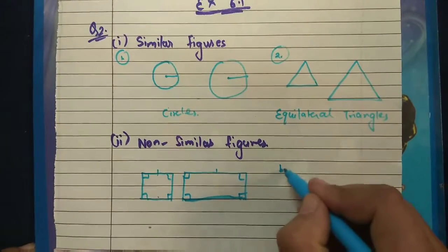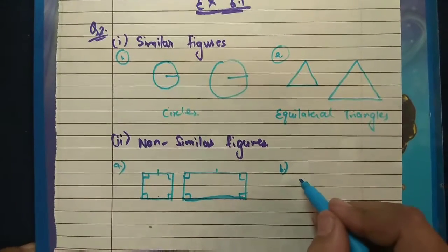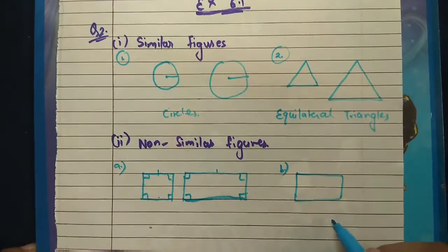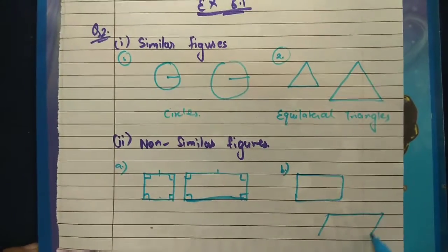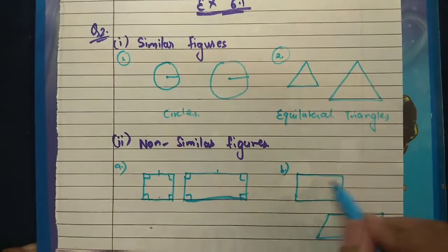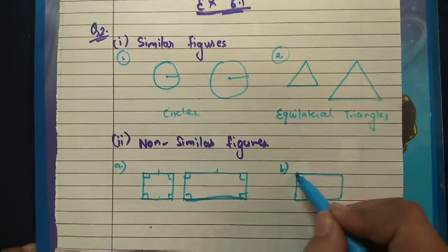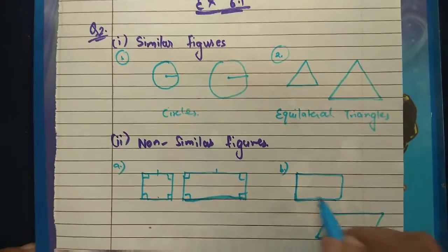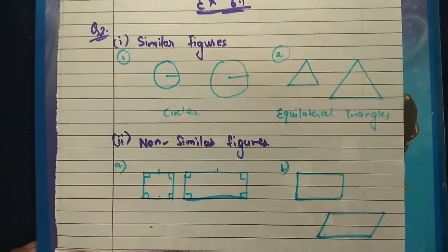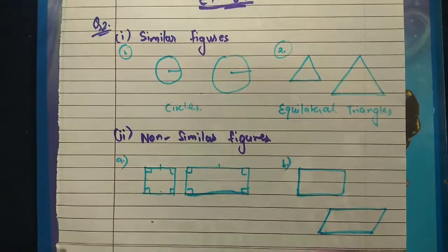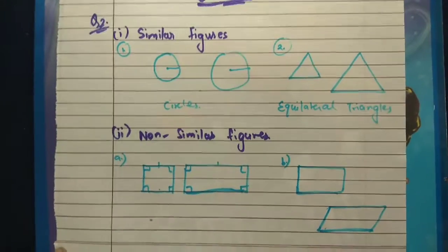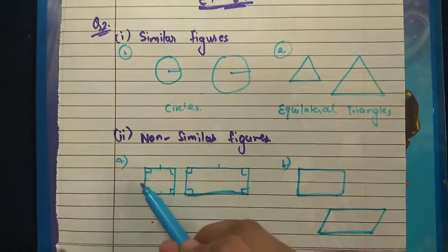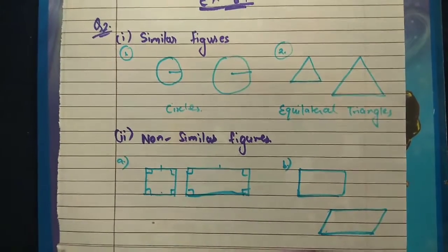For non-similar figures, we can give examples like a circle and a rectangle, or a rectangle and a parallelogram. In these cases, the angles are not the same. Remember, two conditions must be satisfied for similarity: the corresponding angles should be equal and the ratio of corresponding sides should also be equal.